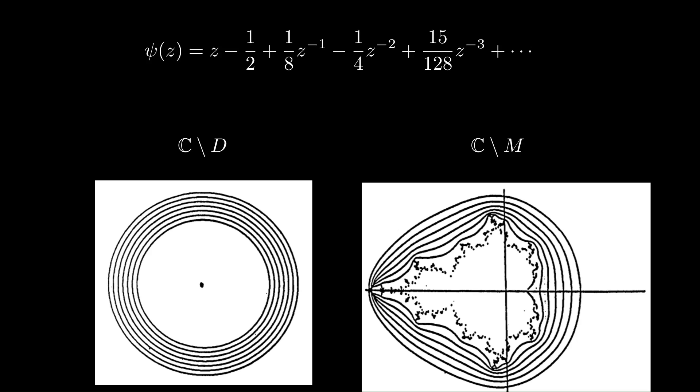So if we look at circles just outside the unit circle, this function will send it to curves just outside the Mandelbrot set. And as we get closer and closer to the unit circle, it will sort of wrap around the Mandelbrot set closer and closer. So if we plug in a point on the unit circle, this function should send it to a point on the boundary of the Mandelbrot set. And what that gives us is actually a Fourier series, because the real and imaginary parts can be written in terms of sines and cosines.